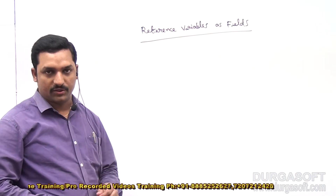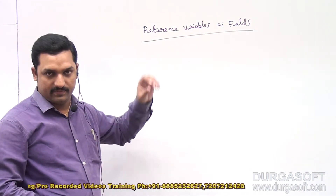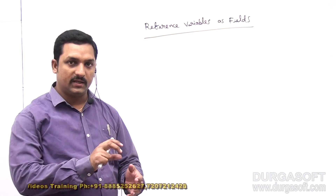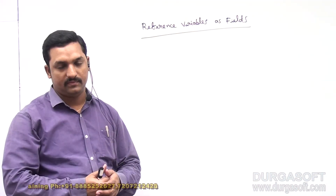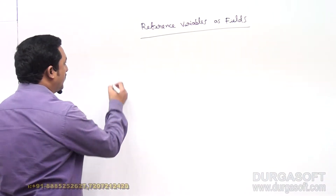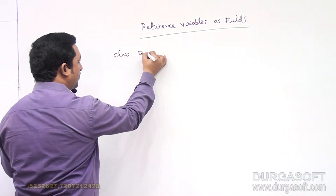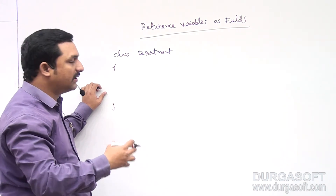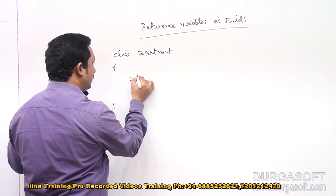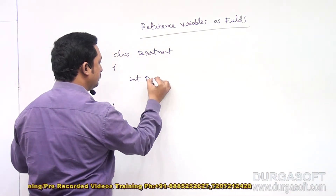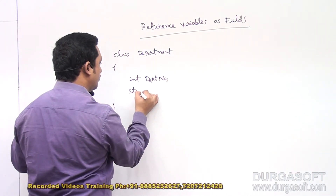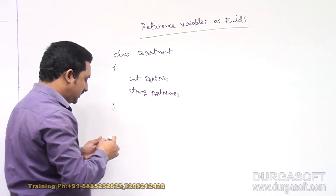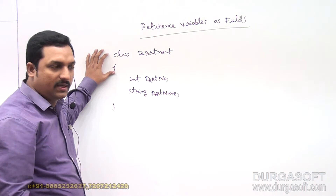In this lesson, we are going to see the next topic: Reference Variables as Fields. Generally we create reference variables in the main method only, but it is also possible to create a reference variable inside the fields of another class. Suppose we have a class called Department, and we are going to create some fields inside it, like Department Number and Department Name.